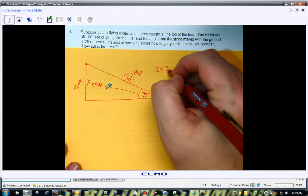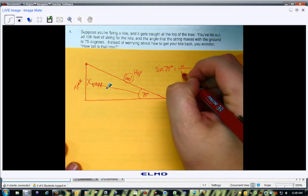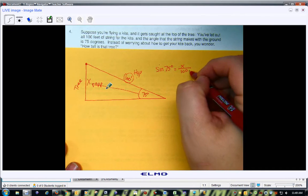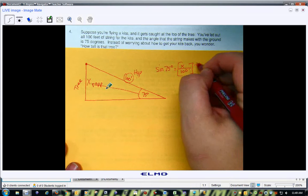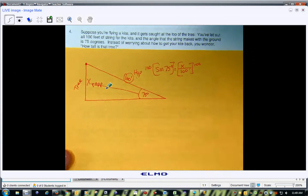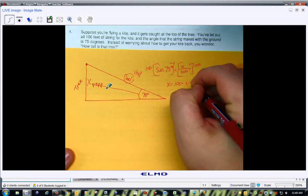So the sine of 75 degrees is going to be the opposite side over the hypotenuse, which is 100. So we multiply by 100. So x is equal to 100 times the sine of 75 degrees.